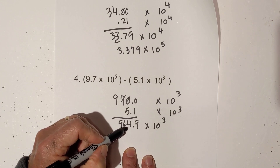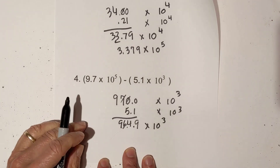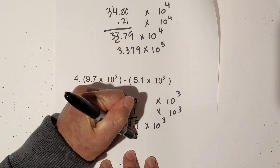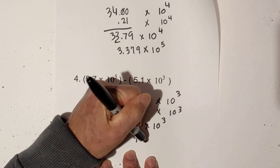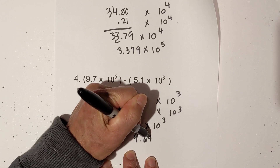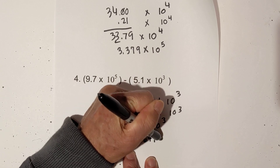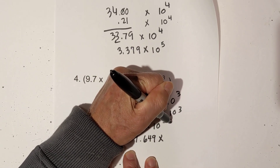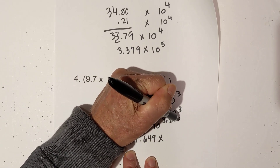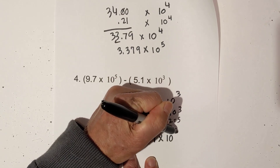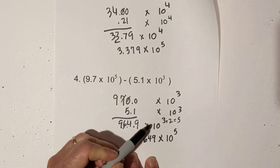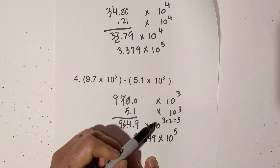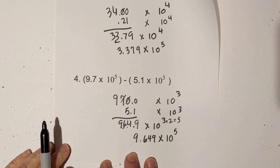That gives 4.60 minus 5.1, which yields 9.649 times 10 to the 3rd. I'm not between 0 and 10, so I move the decimal two places to the left — the number is getting smaller so I add 2 to the exponent — giving 9.649 times 10 to the 5th.